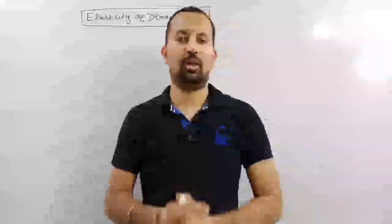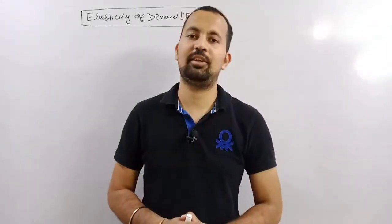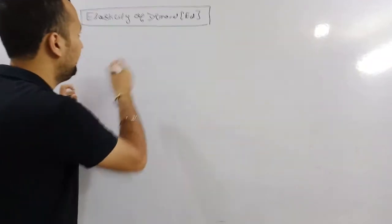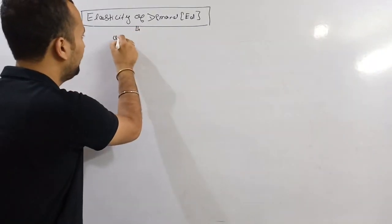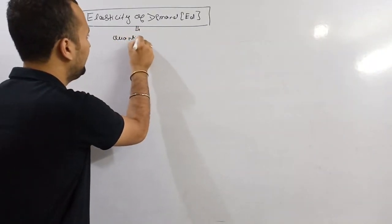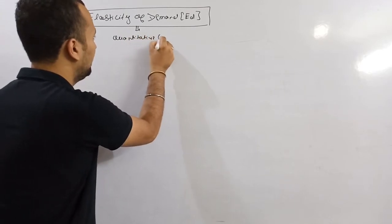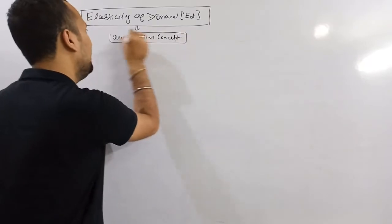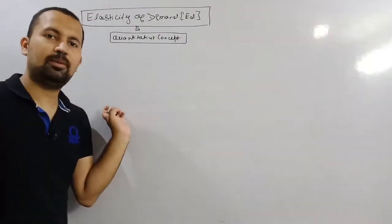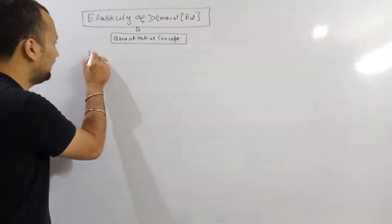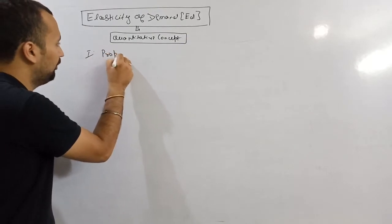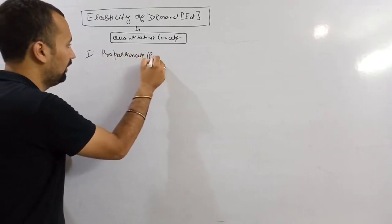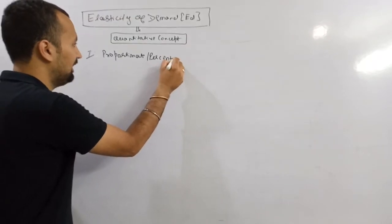Today our topic is elasticity of demand. It is a quantitative concept, meaning it shows exact changes in the quantity due to change in price. Its first method is the proportionate method or percentage method.